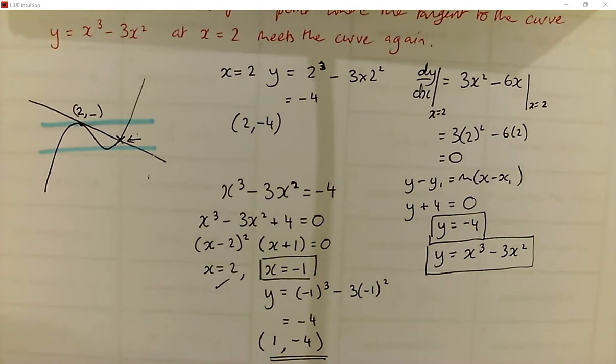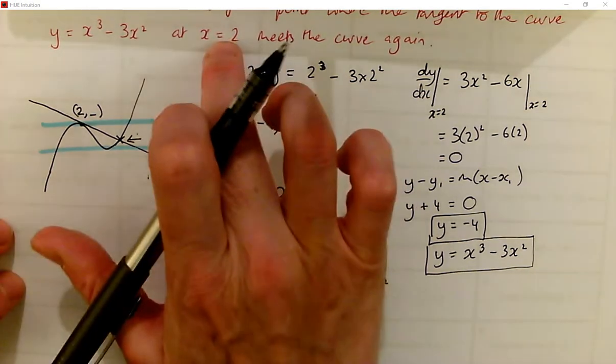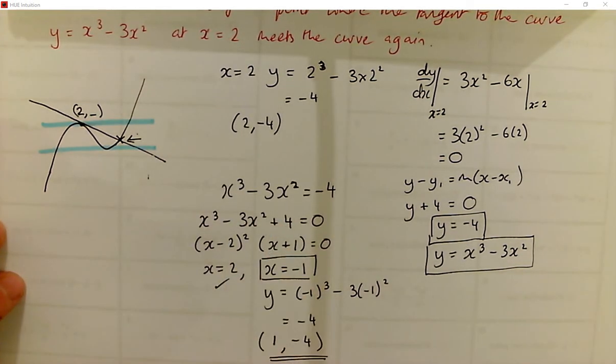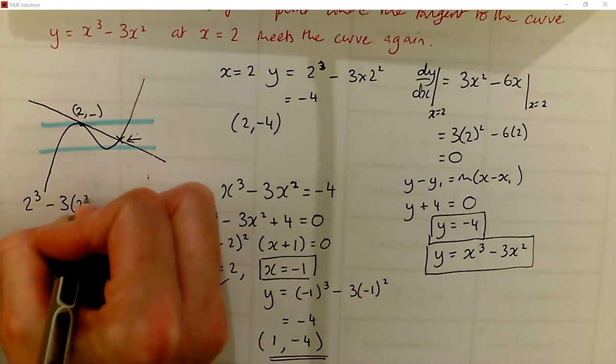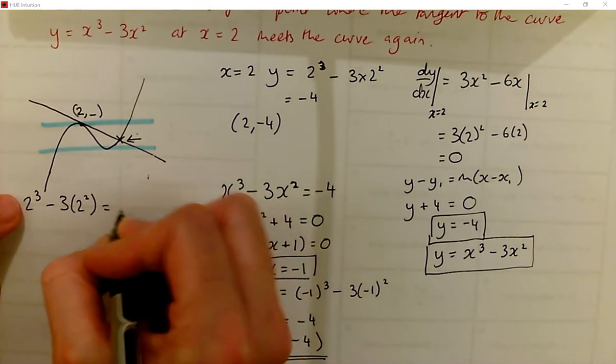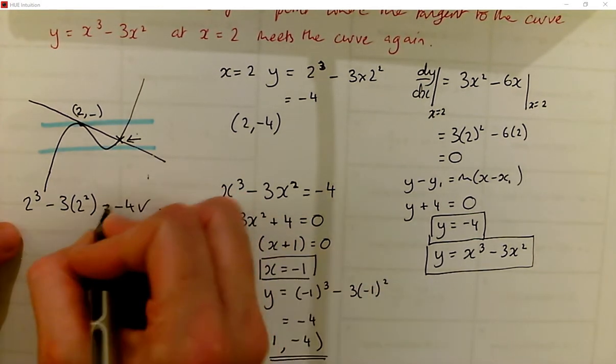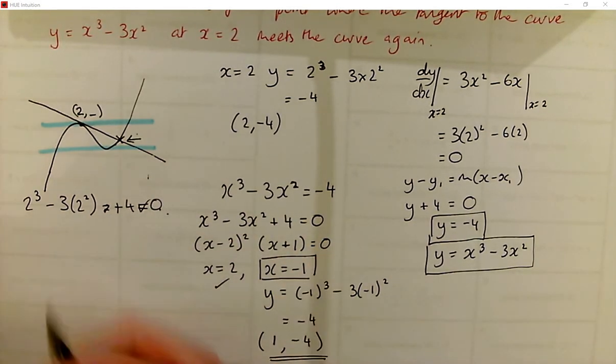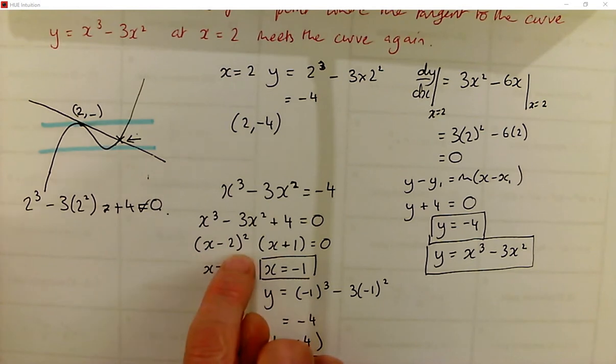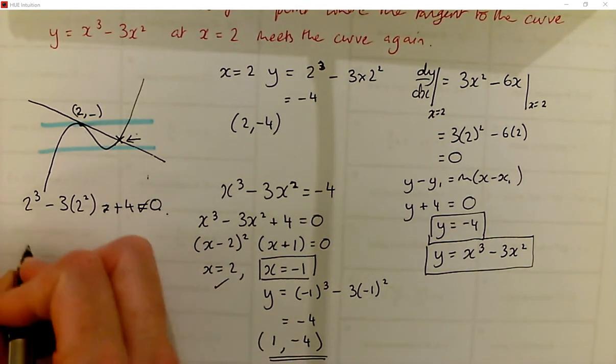And if you have learned the factor theorem, what you would do is you'd cheat on your calculator, then you'd try out putting 2 in there. In fact, we know that x equals 2 is one of the solutions. So we'd try 2 cubed minus 3 times 2 squared, and we should get negative 4. And then we try, or plus 4 is 0. And then we try dividing by one factor that we definitely know, which is x minus 2, because 2 is a solution.